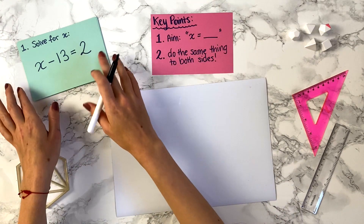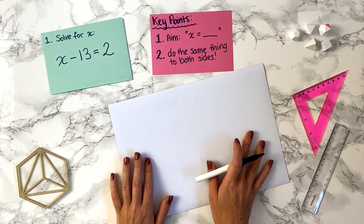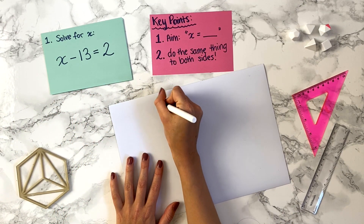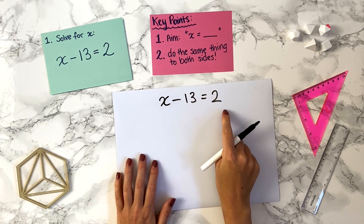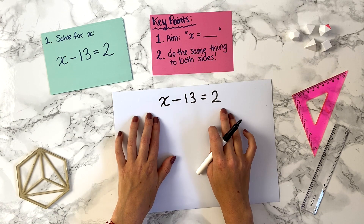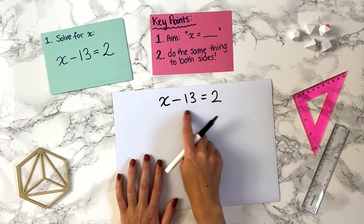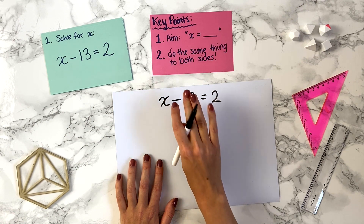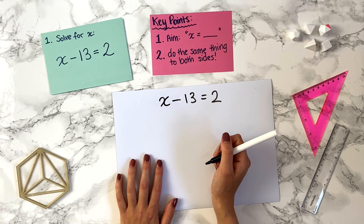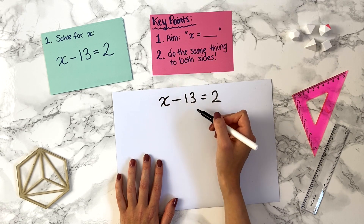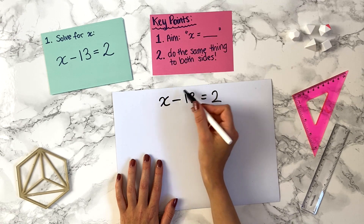Question one: solve for x, x minus 13 equals 2. We want to get x on its own. The x is on the left-hand side, so if we can get rid of the 13, we'll have x on its own. To get rid of minus 13, we add 13, which takes that term to zero. So we want to plus 13 on the left-hand side.